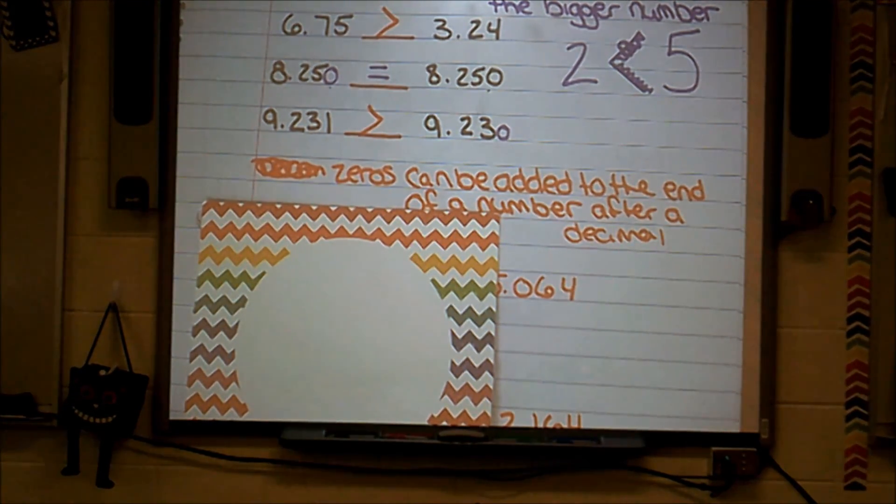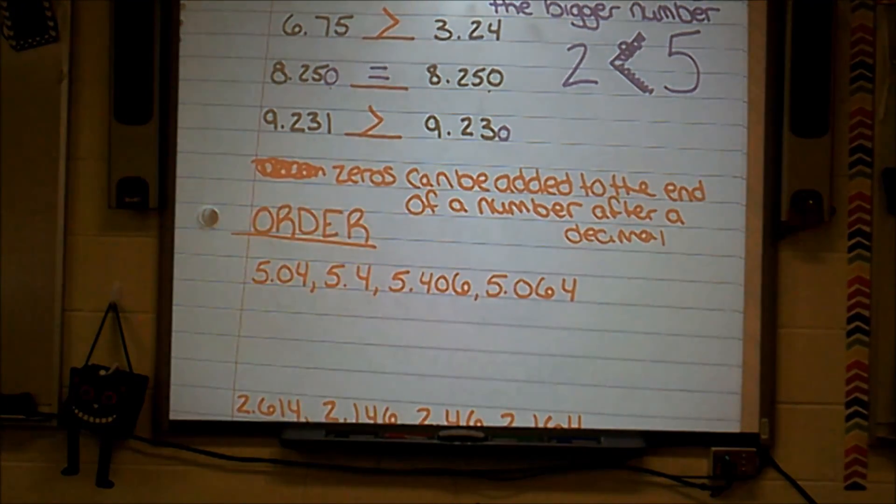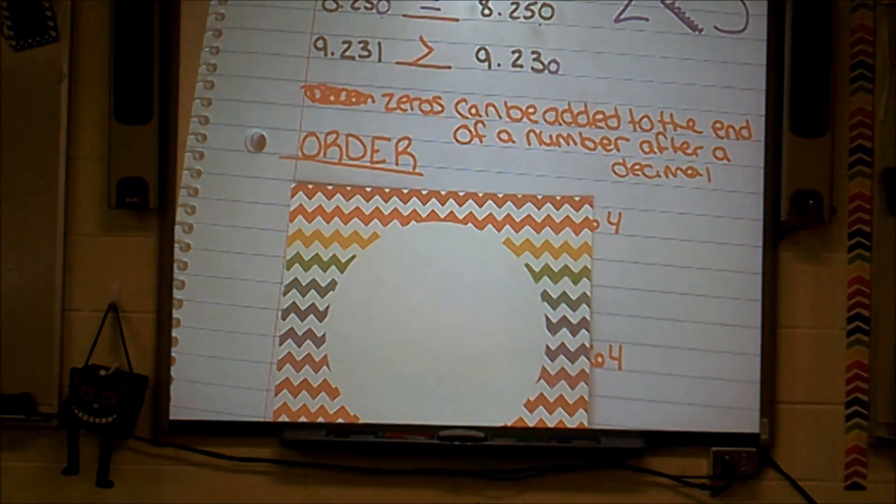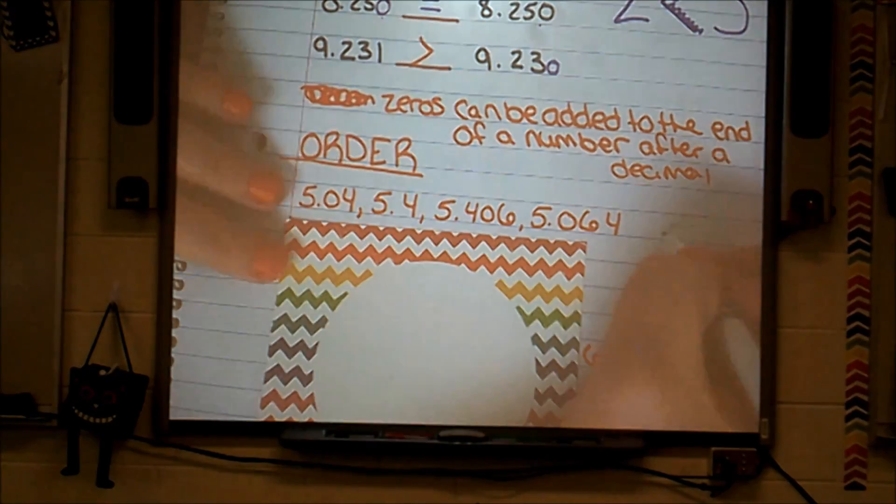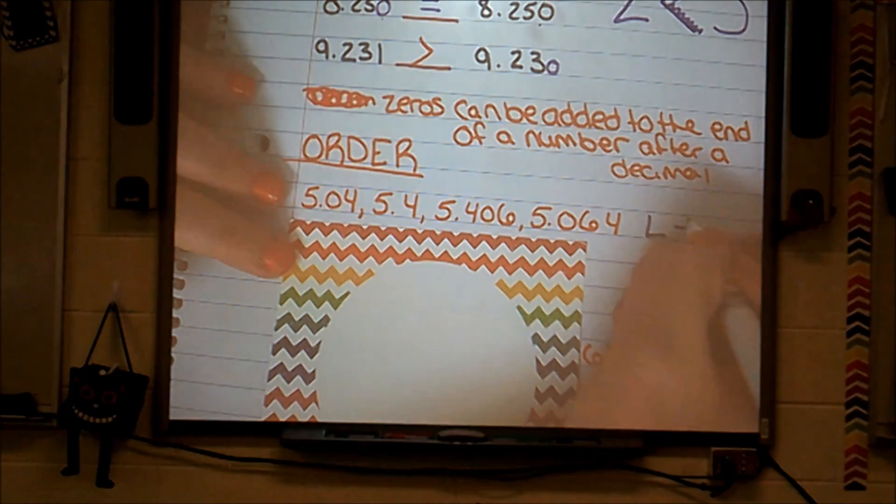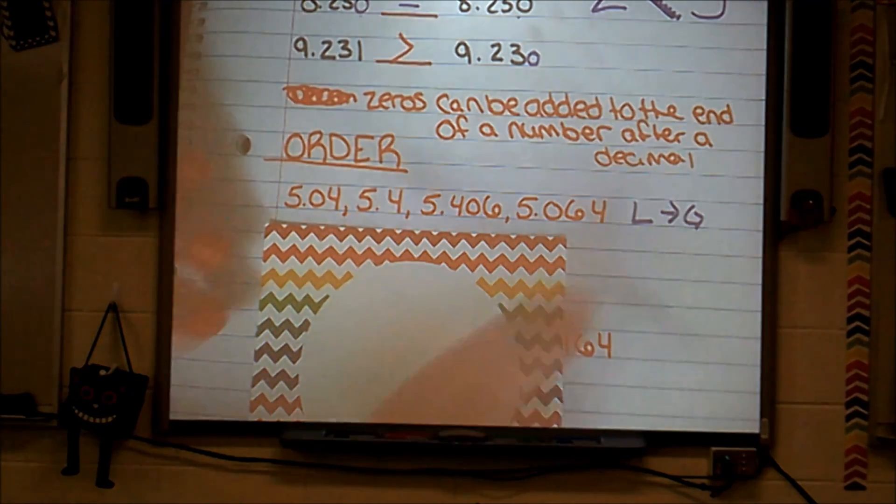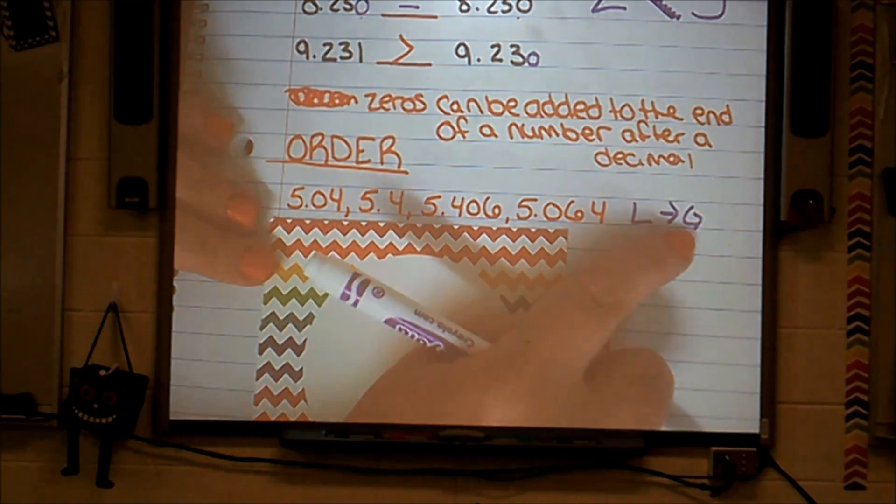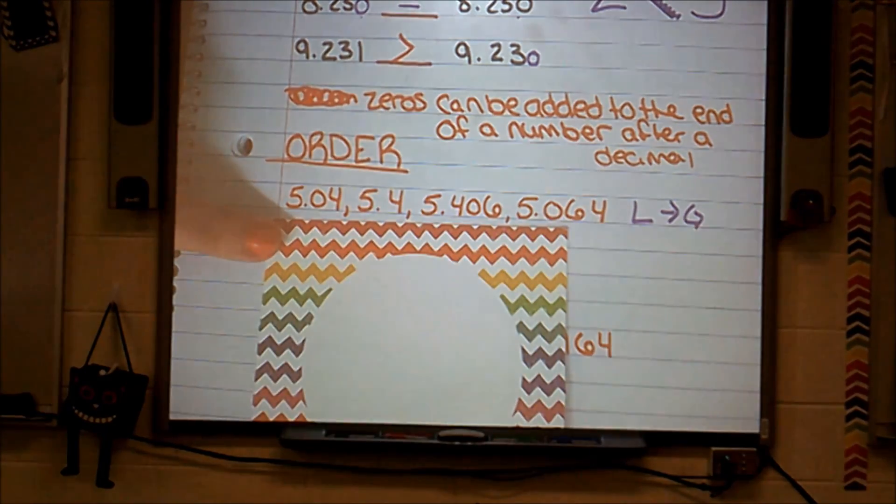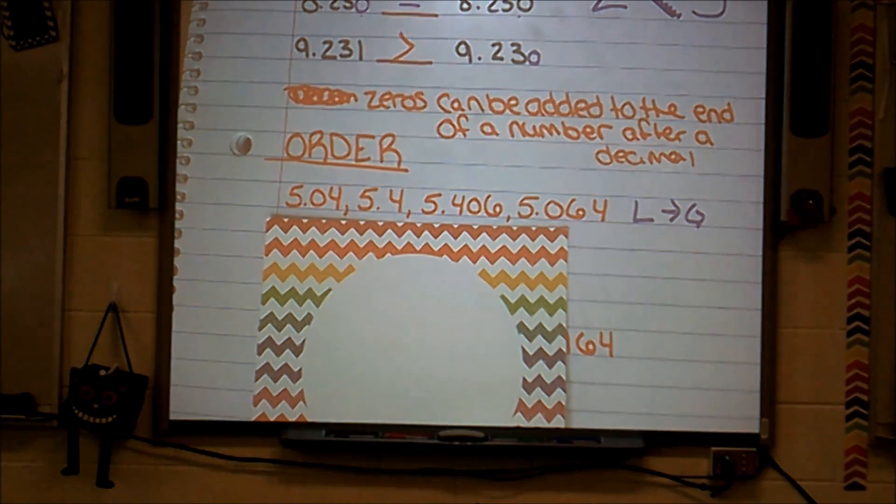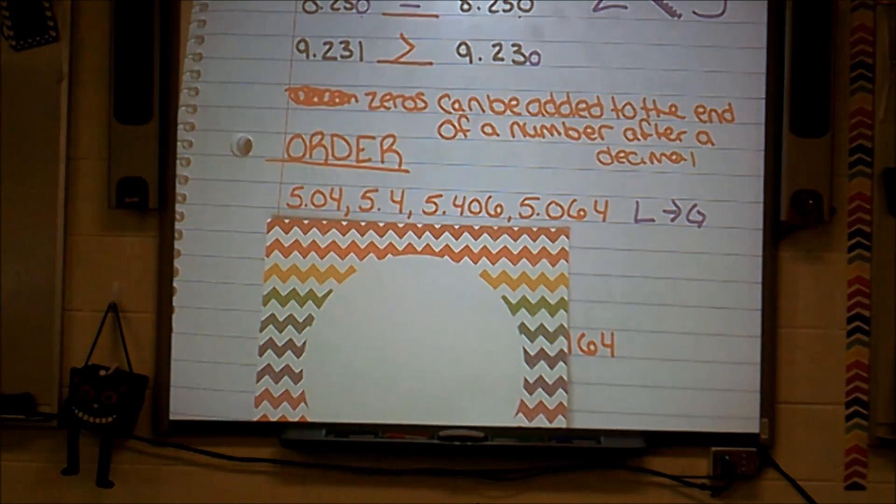We're going to move right into now ordering our numbers. And today we're going to order this first set from least to greatest. From least to greatest. And that means from the teeny tiniest number to the biggest, most gigantic number listed.